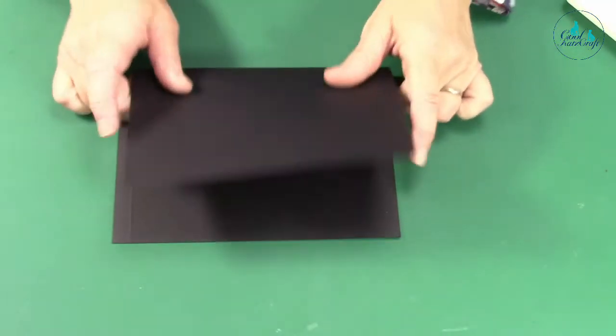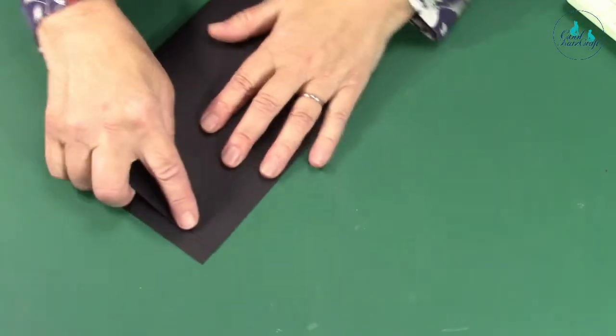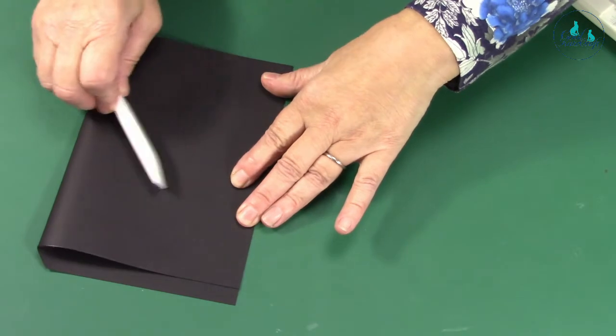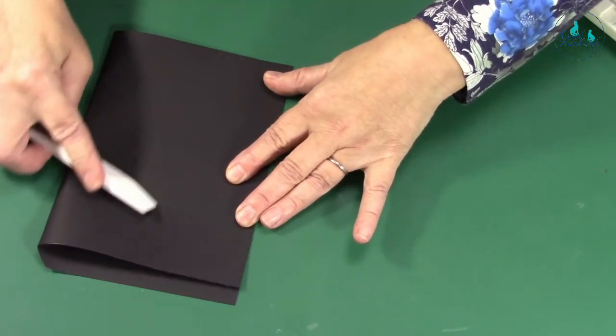Then you're just going to fold this in half over there, lining your edges up. Start from the middle and work up.